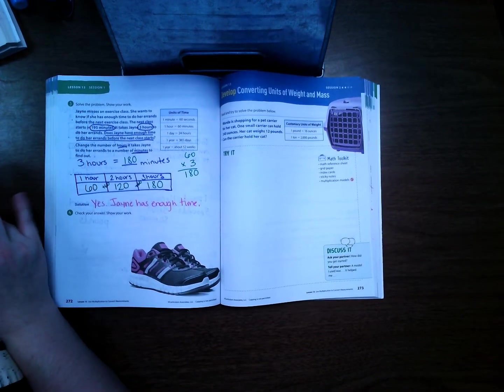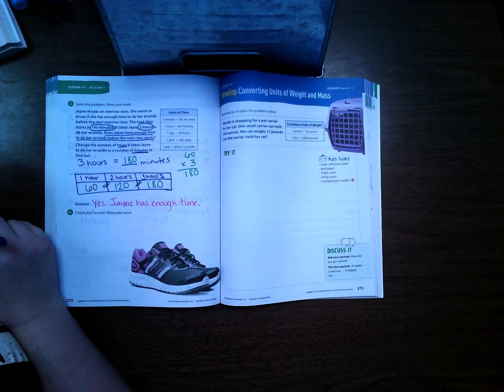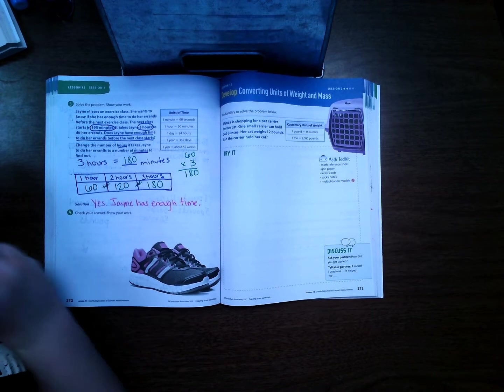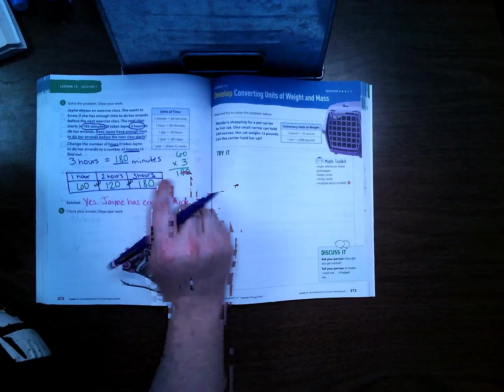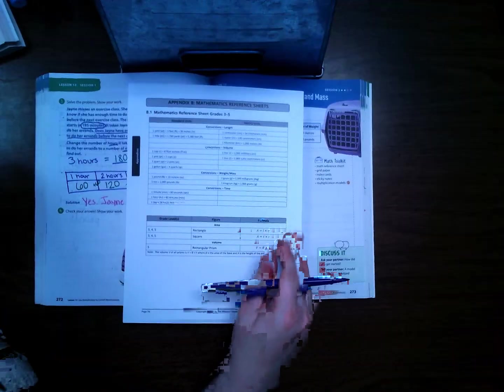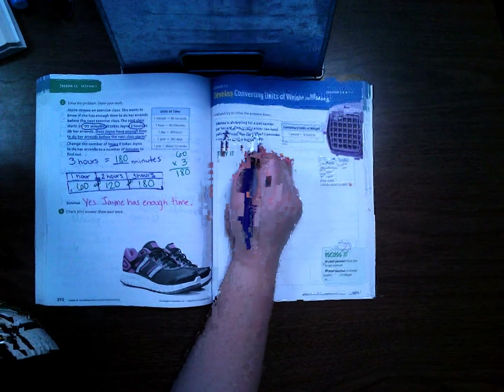Welcome back students, this is session 13, lesson 13 session 2. We are in volume 1 math book, we are on page 273. You also want to make sure that you have your reference sheet here so that way we can go through our conversions as we're going through this.